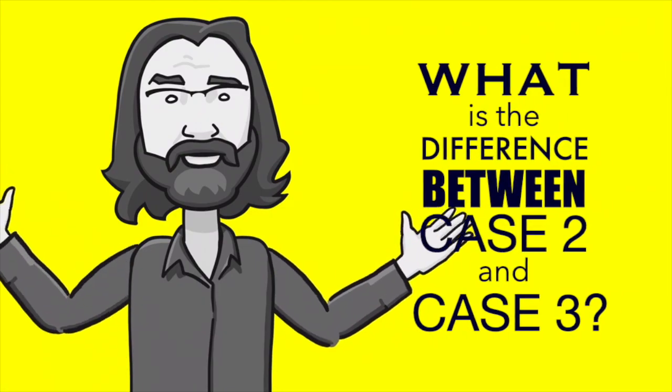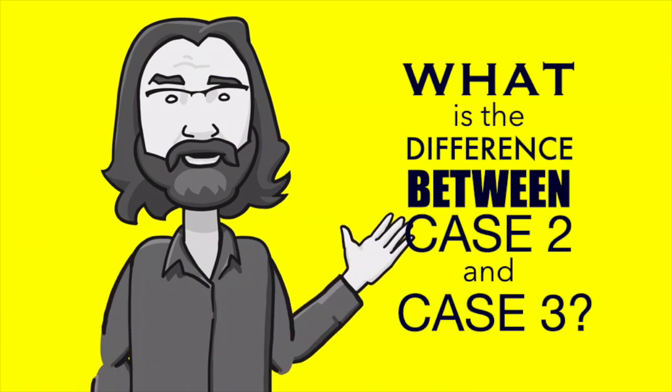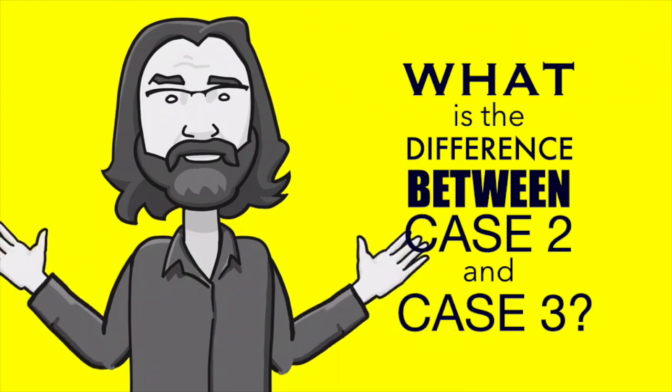Okay, so here's the question. If you agreed with Mill on case two, but not on case three, what's the difference?